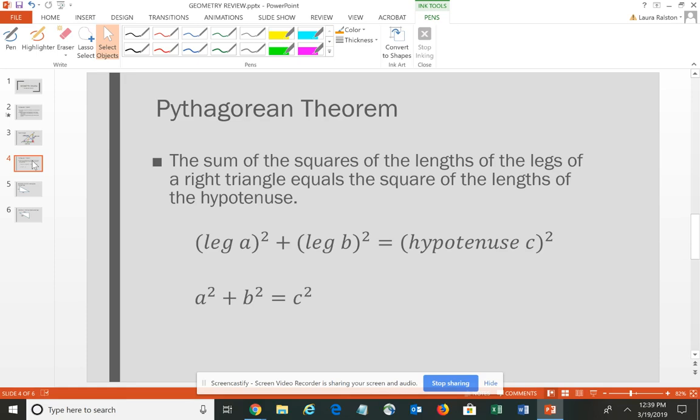In formal math language, the Pythagorean Theorem says the sum of the squares of the lengths of the legs of a right triangle equals the square of the length of the hypotenuse. In symbols, leg a squared plus leg b squared equals hypotenuse c squared. Most people remember the formula a² + b² = c². It's important to note that a and b represent the legs that form the right angle, and c is the hypotenuse, the side opposite the right angle.